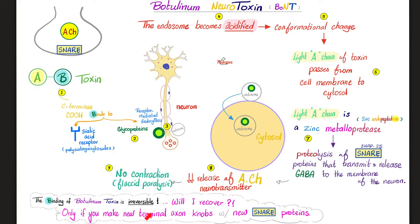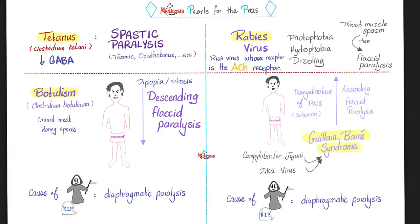Just like tetanus, the binding of botulinum toxin is irreversible. The only chance of recovery is to regenerate brand new terminal axon knobs with brand new snare proteins. Tetanus causes spastic paralysis by decreasing release of GABA, but botulism causes flaccid paralysis by decreasing release of acetylcholine. Both can kill you from diaphragmatic paralysis. Contrast botulism with Guillain-Barré: botulism causes descending flaccid paralysis, while Guillain-Barré causes ascending flaccid paralysis.